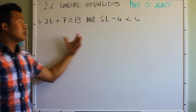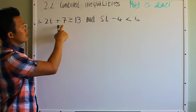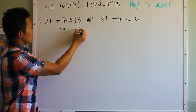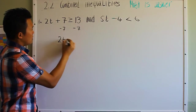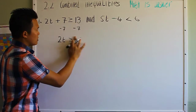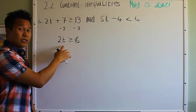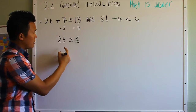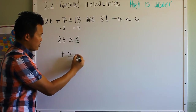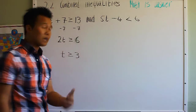We're going to start out by solving each inequality separately. To isolate the t variable, subtract 7 from both sides. That gives us 2t greater than or equal to 6. Divide both sides by 2, and t is going to be greater than or equal to 3. So you finish with the first inequality.